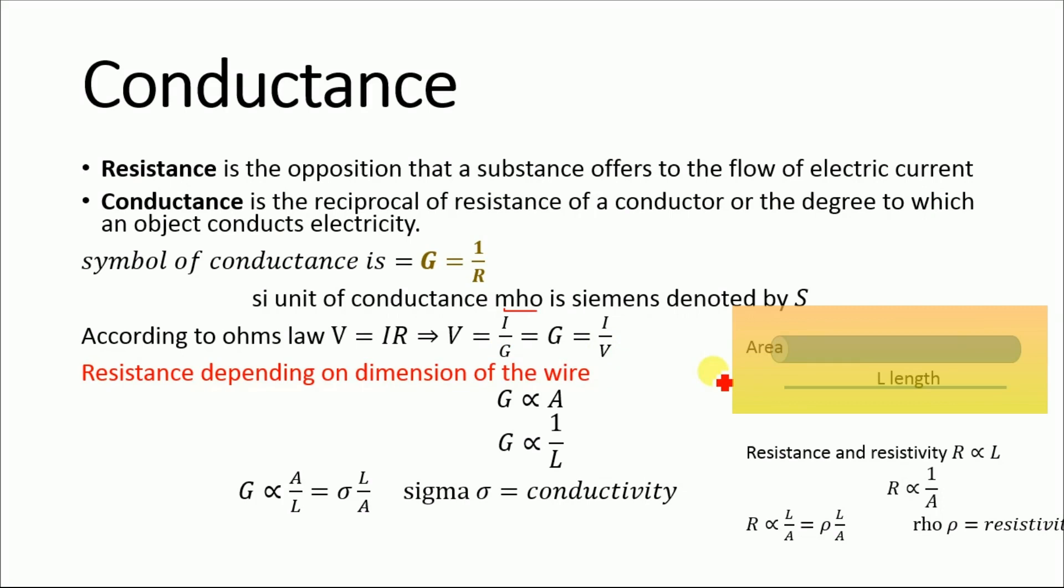Now let's consider a wire having cross-sectional area A and length L. The conductance G is directly proportional to the cross-sectional area of the wire and inversely proportional to the length of the wire. Combining these two relationships, we have G directly proportional to A divided by L.